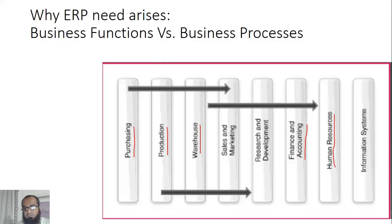This functional structure actually created functional applications. The accounts department, containing all the expertise of accounting and finance people and headed by an accounts or finance manager, has its own finance or accounting application. Similarly, the purchase department has its own purchasing application, and the inventory management and warehouse departments have their own applications. So functional departments historically resulted in isolated, department-oriented applications.